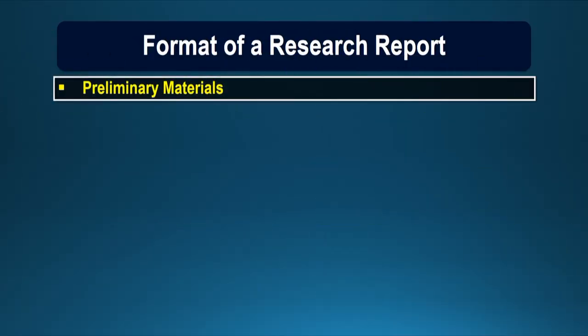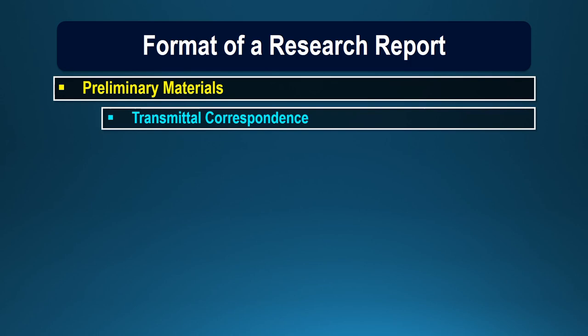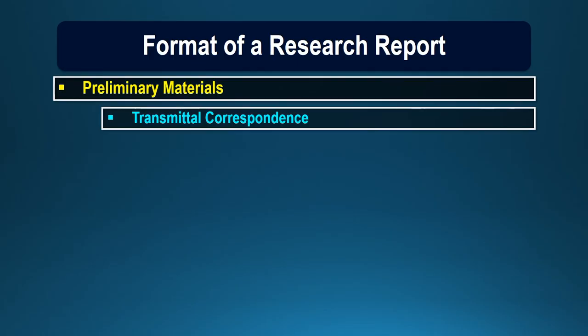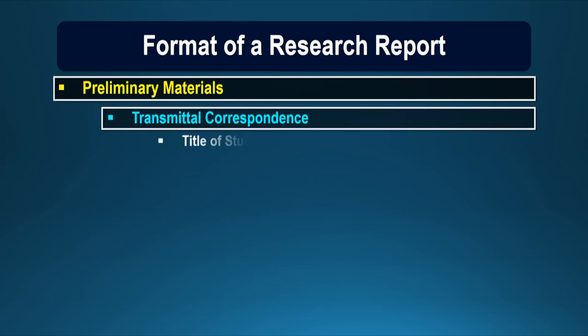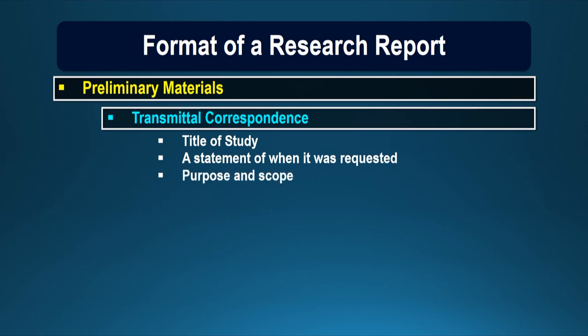Let us study all these sections in detail. Firstly, the preliminary material. Some reports may have one page containing the transmittal correspondence. This page is included in those reports where the study has been carried out on behalf of some external agency. We may have the title of the study on the first page containing a statement of when it was requested, the purpose and scope, and the acknowledgements.